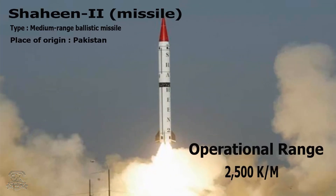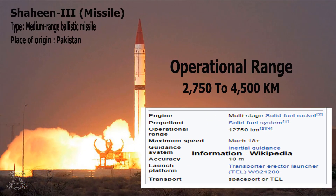Shaheen-2 Missile: Type – Medium Range Ballistic Missile, Place of Origin – Pakistan, Operational Range – 2,500 km. Shaheen-3 Missile: Type – Medium Range Ballistic Missile, Place of Origin – Pakistan, Operational Range – 2,750–4,500 km.